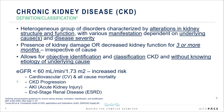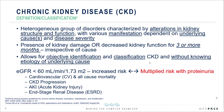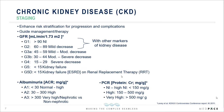When eGFR drops below 60, there is a notably increased risk for cardiovascular disease, all-cause mortality, cardiovascular mortality, progression of the underlying CKD, acute kidney injury, and end-stage renal disease requiring dialysis or transplant. This risk is multiplied when there is proteinuria — protein in the urine. Having an objective definition also allowed for identification and classification of CKD without needing to know the etiology of the underlying cause, which has exponentially increased awareness of kidney disease.